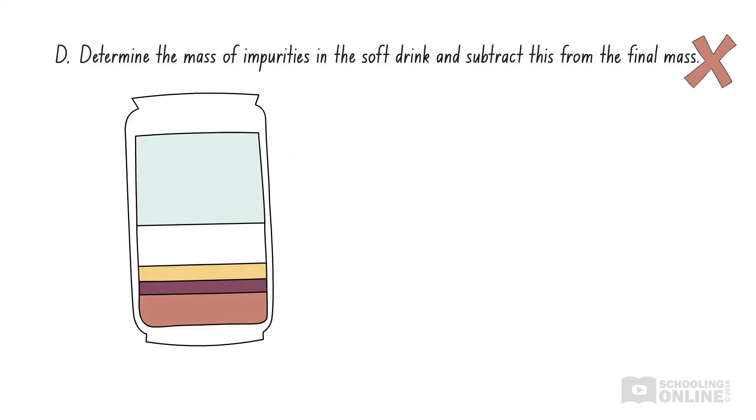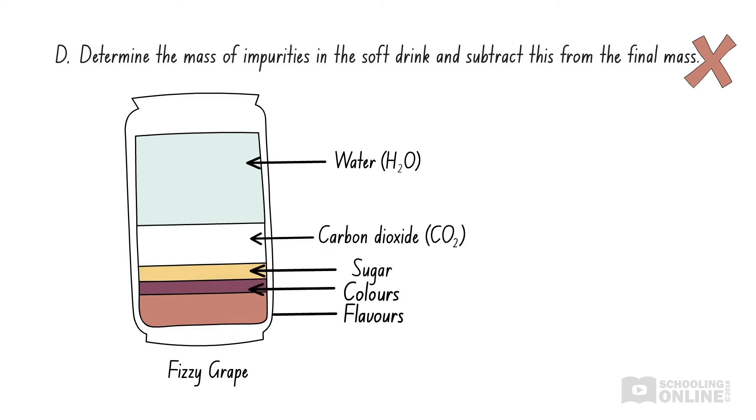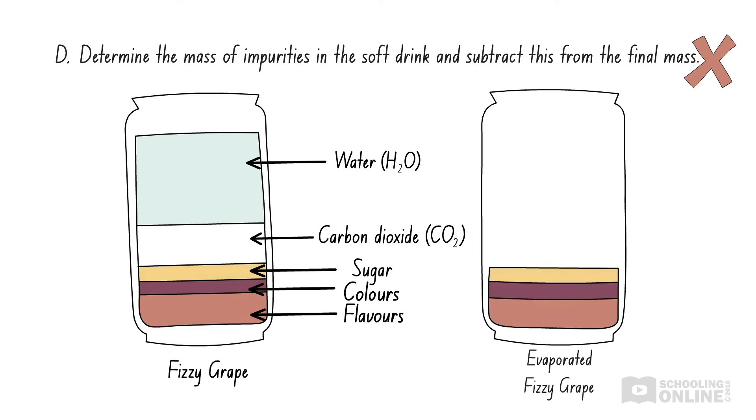If we think about it, soft drinks typically contain water, carbon dioxide, sugar, colours and flavours. When Marie heated up the soft drink, all the water evaporated, along with the carbon dioxide. That means she measured the mass of a mixture of sugar, colours and flavours. The colours and flavours are the impurities. Option D refers to removing the impurities and finding the mass of sugar by itself.